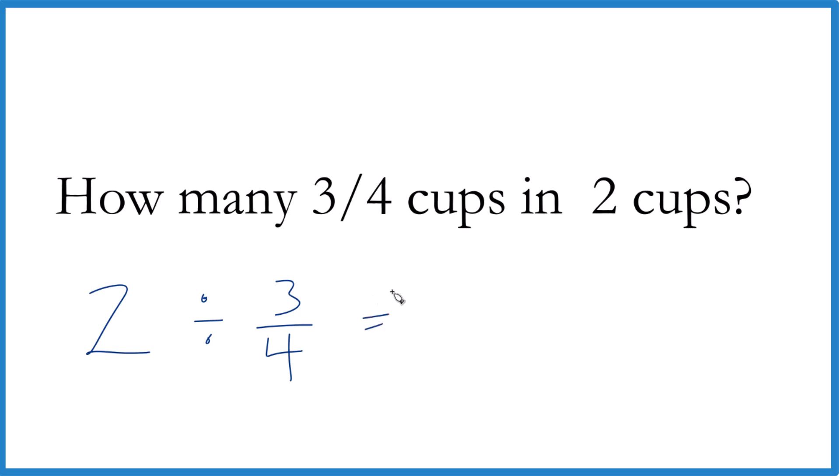Thing is, when we're dealing with fractions here and dividing, it's a lot easier, instead of division, to multiply, as long as you multiply by the reciprocal. So we move the three here and the four here. So four-thirds, that's a reciprocal of three-fourths.